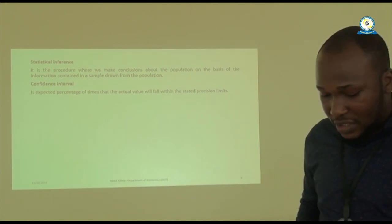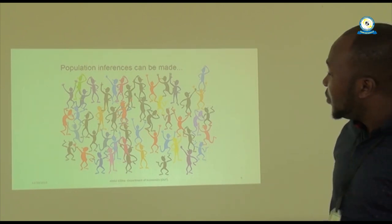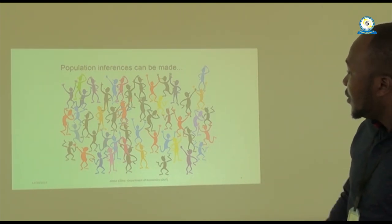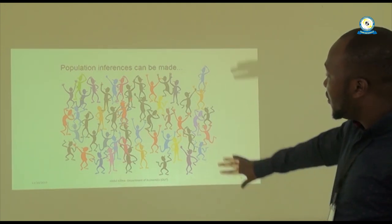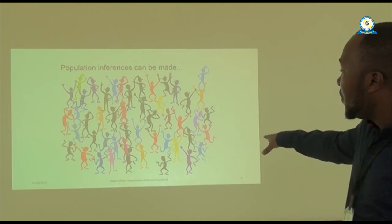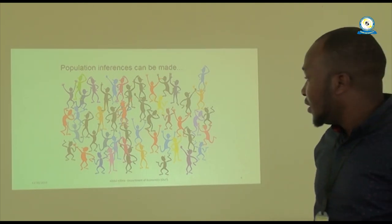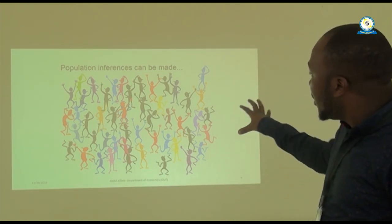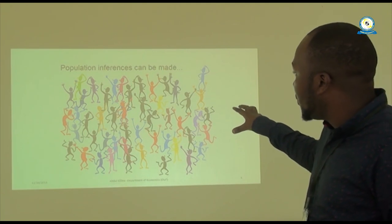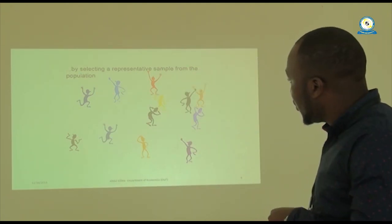As you can see in the illustration, we have a population of different kinds of people — color-coded to represent people from America, Europe, Arabia, and Asia — showing the diversity in the population. We need to make a true representation from that population. You can observe the population and the sample drawn from it. I hope that is very clear.